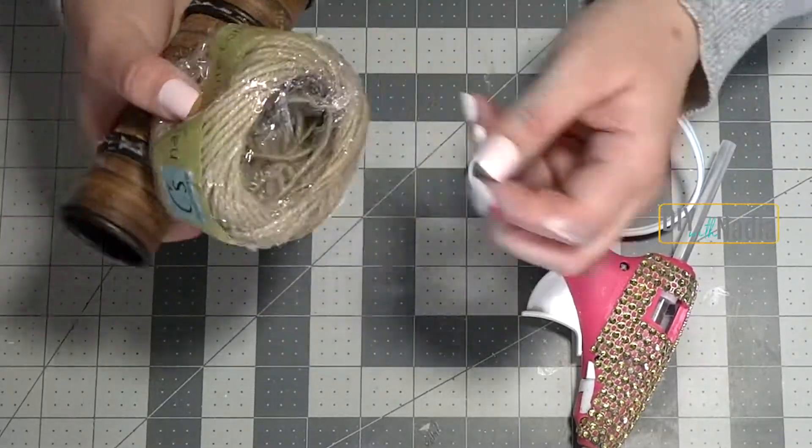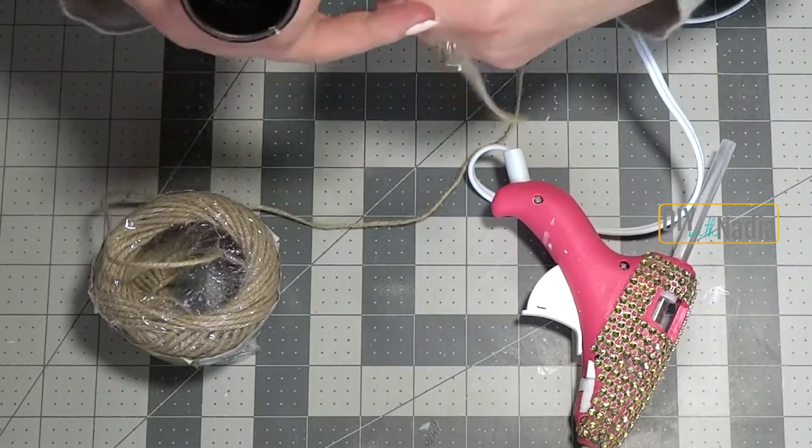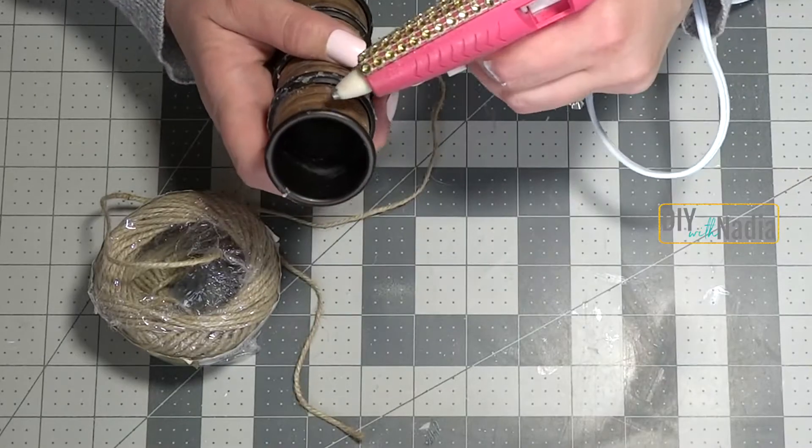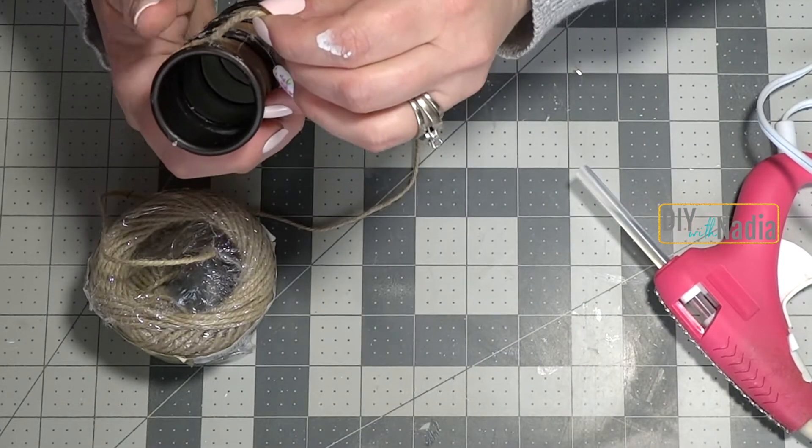What I decided to do is I'm just grabbing some jute cord from the Dollar Tree and I'm just going to wrap it all the way around starting at the top.